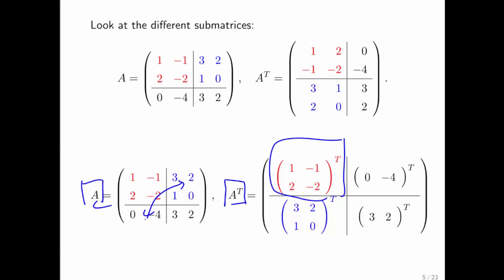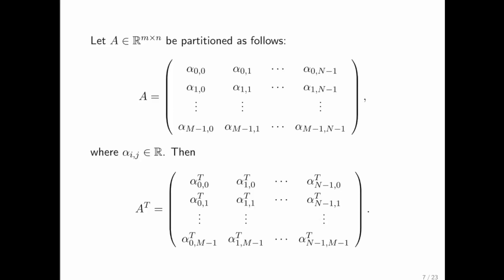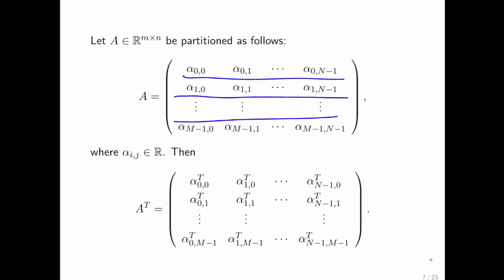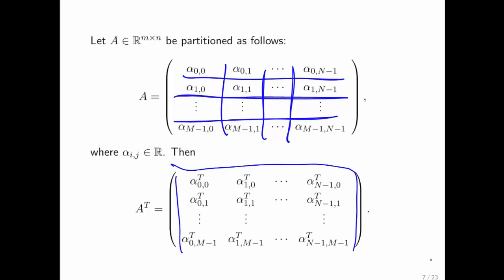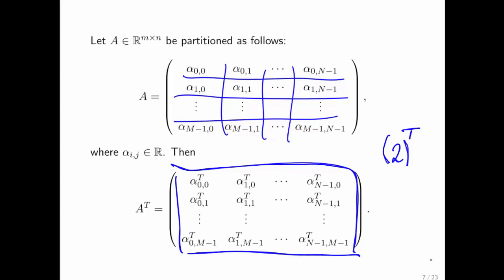If you look carefully at what happened here, that's exactly what happened. What happens if we do this with scalars? Notice that here each submatrix itself is just a scalar, and if we transpose that, we get this — except that each submatrix itself must be transposed. But if you have a scalar, say two, and you transpose it, you can think of that scalar as a one-by-one matrix, and transposing a one-by-one matrix gives you that matrix back. So a scalar transposed is just that scalar.